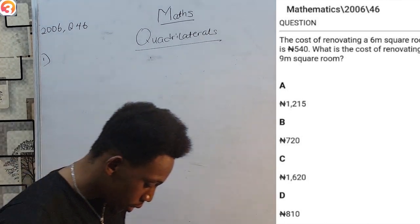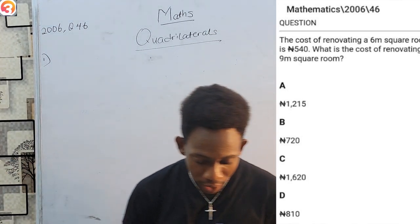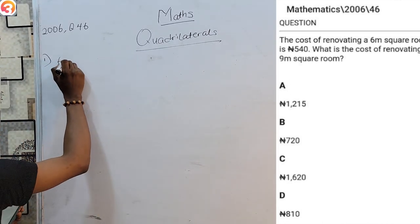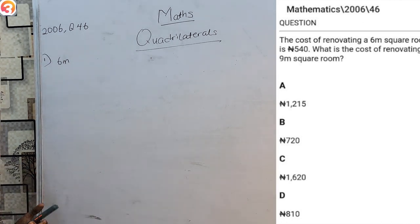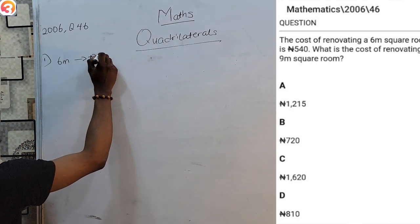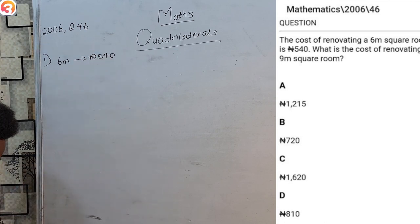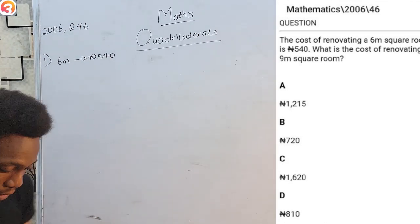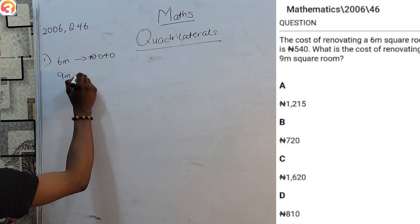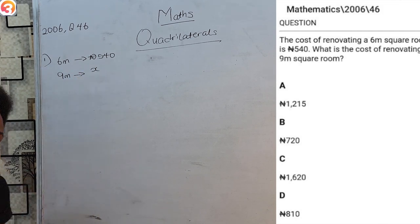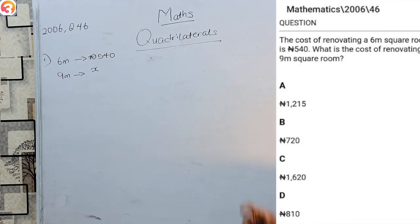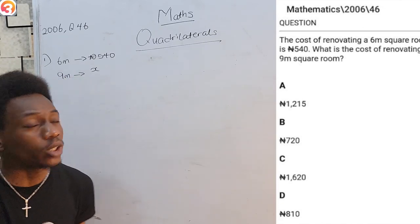This question says: the cost of renovating a six-meter-square room was 540 Naira. What is the cost of renovating a nine-meter-square room? A very simple analogy: if six meters squared costs 540, how much does one meter squared cost? If six is 540, then one meter squared must be 540 over 6.